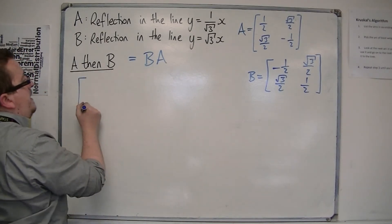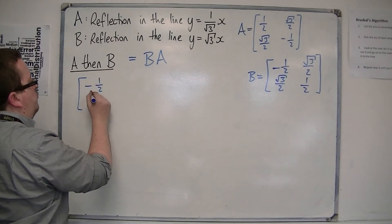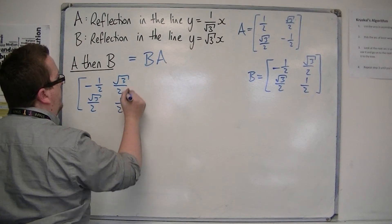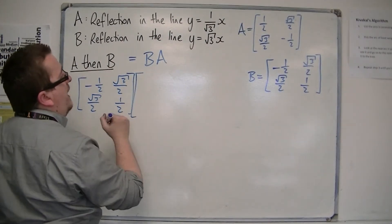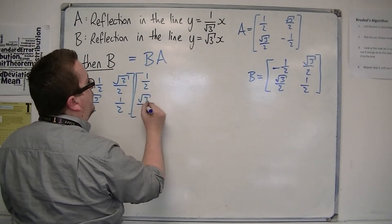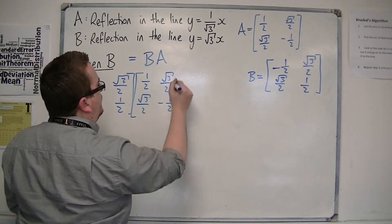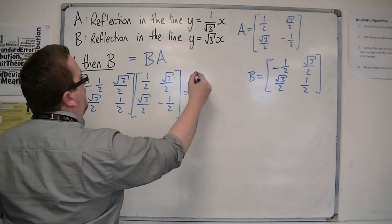We have B, so minus 1 half, root 3 over 2, root 3 over 2, 1 half. We've got A, multiplied by A, 1 half, root 3 over 2, root 3 over 2, minus 1 half. We've got to multiply these matrices together.